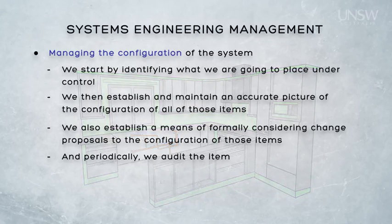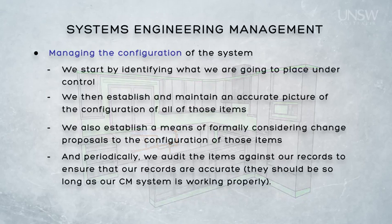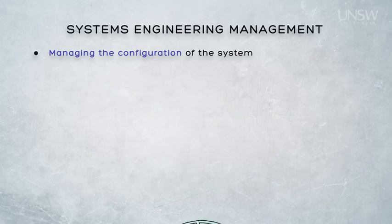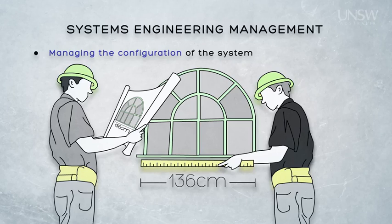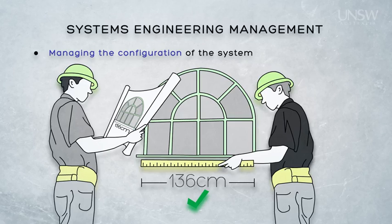Finally, configuration management also involves periodically auditing the process to make sure it's working properly. We need to check that everyone is using the agreed documentation in performing their work, and we also need to confirm that the material being used and the construction process being employed is in accordance with the design documentation. Hopefully, our audits will confirm that everything's working well. Poor audit results indicate that something is going wrong with our configuration management systems and warrant investigation. For example, if our plumber is using pipes that are different from what the drawings specify, this could be caused by the plumber doing the wrong thing, or by the plumber working from the wrong drawings. The former requires action against the plumber, whilst the latter requires tightening of our configuration management process.